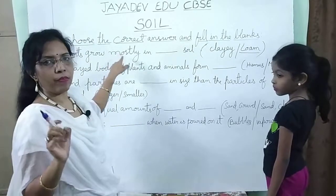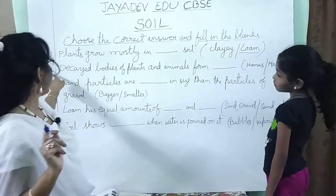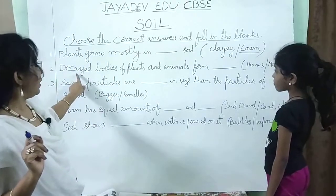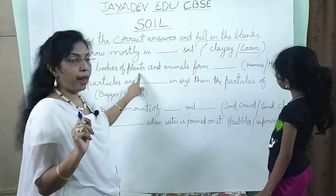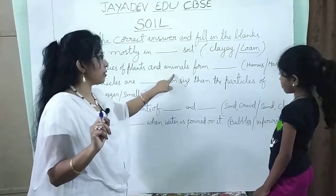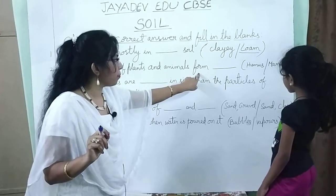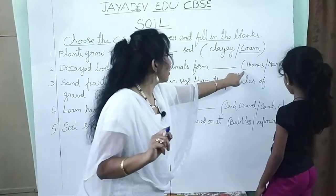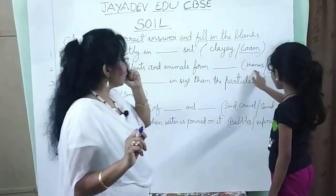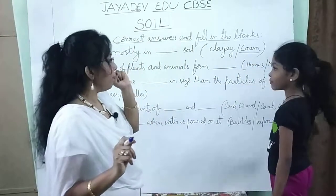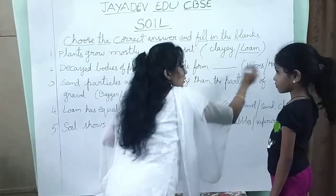The second one is: decayed bodies of plants and animals form — humus or manure? It is humus.